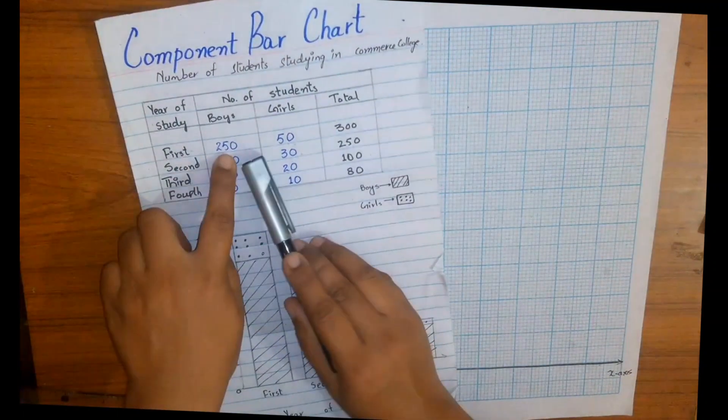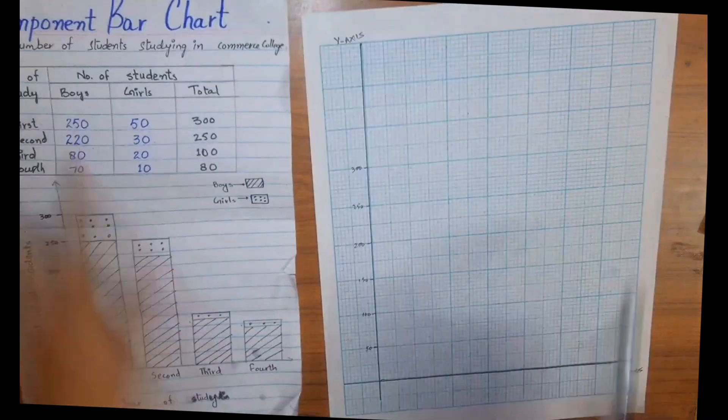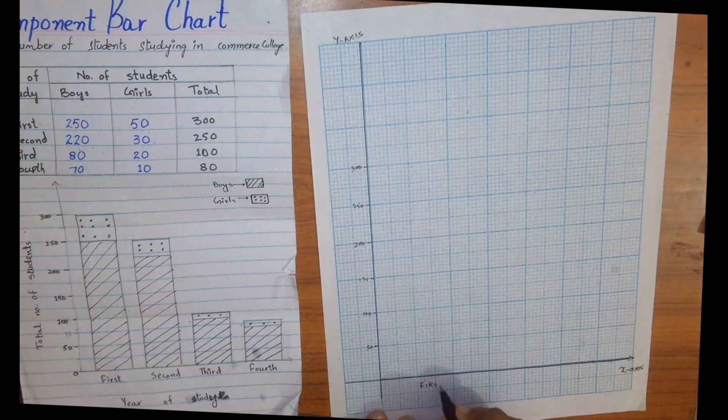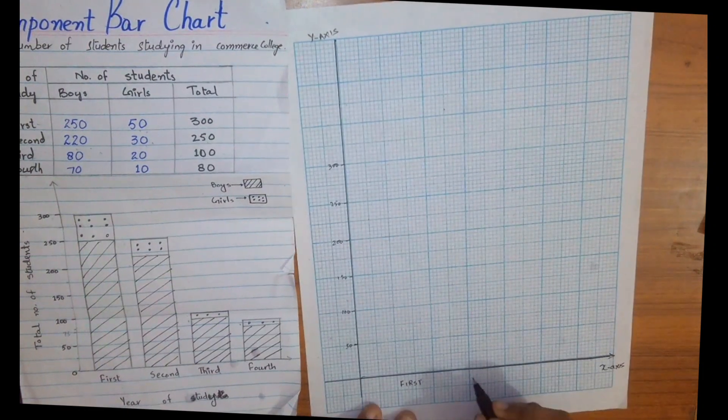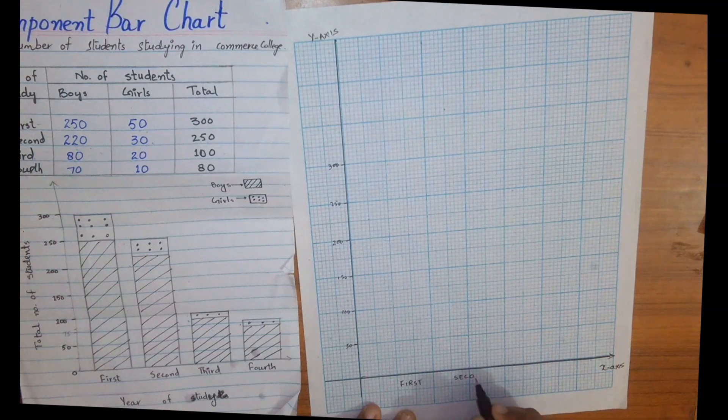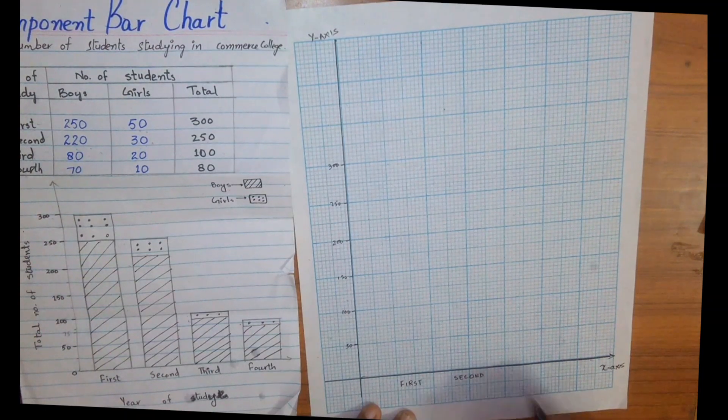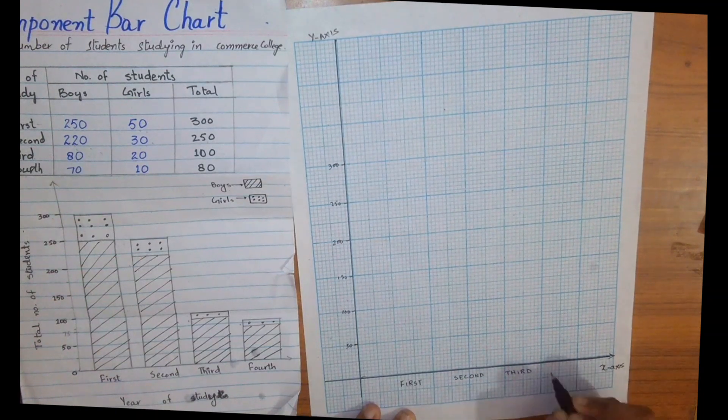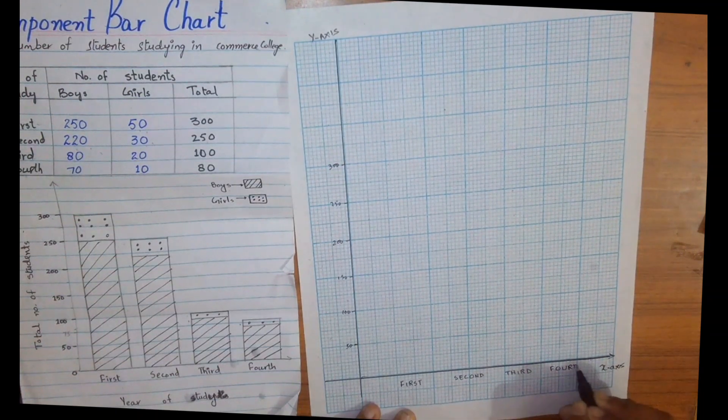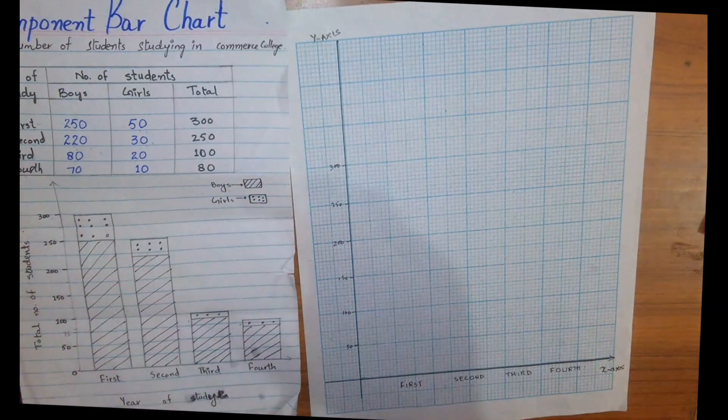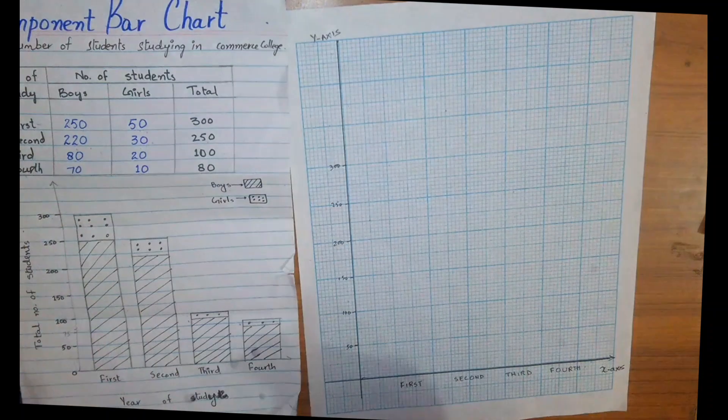Here in the first year the number of boys are 250. Let's write first here, second here, third here, and fourth here. Make sure the width of your bars is similar.